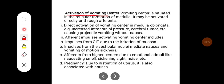The vomiting center is situated in the reticular formation of the medulla. It may be activated directly or through afferents. Direct activation of the vomiting center in the medulla oblongata is caused by increased intracranial pressure, cerebral tumor, etc. This causes projectile vomiting without nausea.